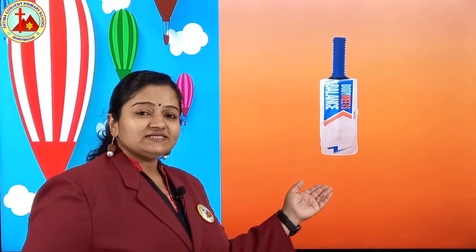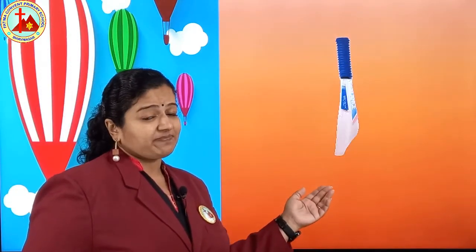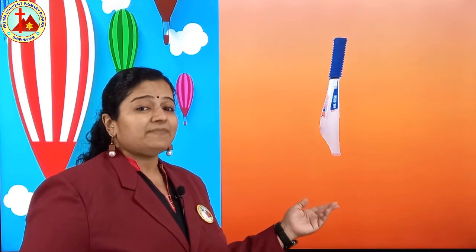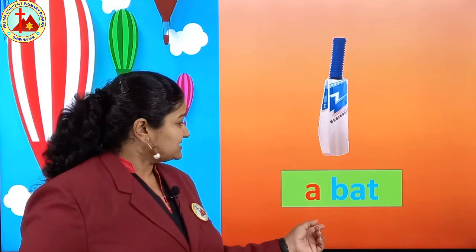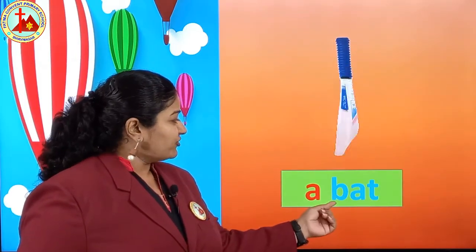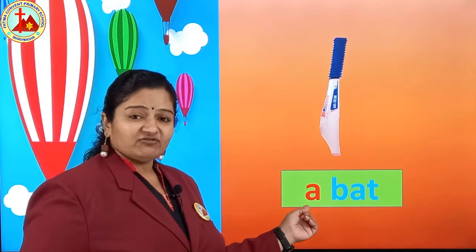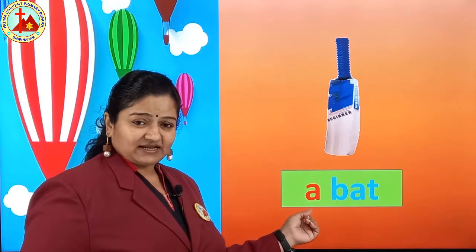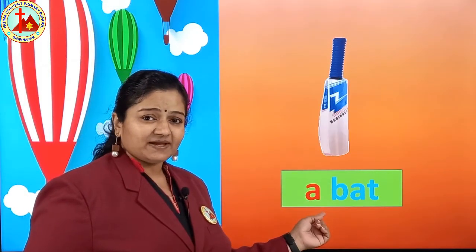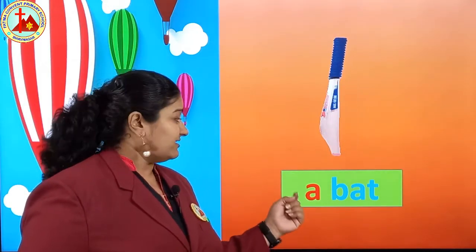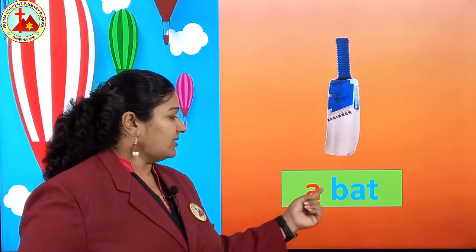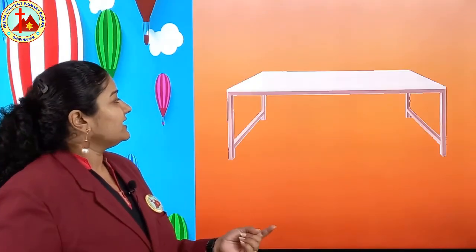Next one is bat. Bat spelling: B, A, T, bat. Before B, will AN or A come? A — very good. Then read: a bat.